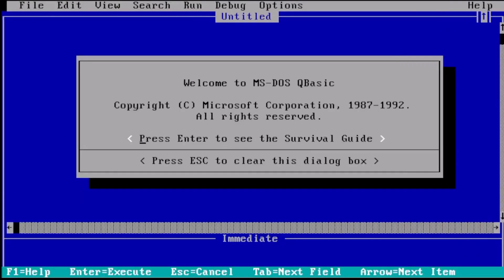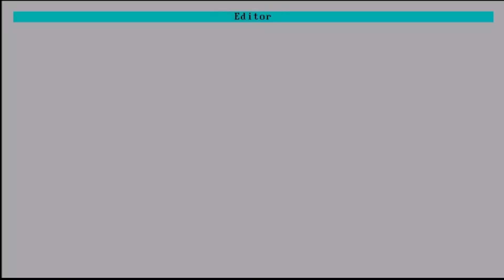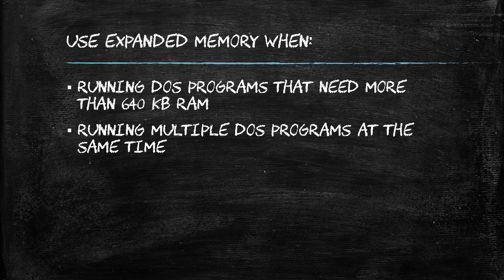You would use expanded memory on MS-DOS when you need to run a DOS program that requires more memory than the 640 KB limit. Expanded memory is also useful for running multiple DOS programs at the same time, because it allows each program to have its own dedicated memory space. It was also compatible with a wide range of popular DOS programs, making it a practical solution without requiring significant changes to existing software.